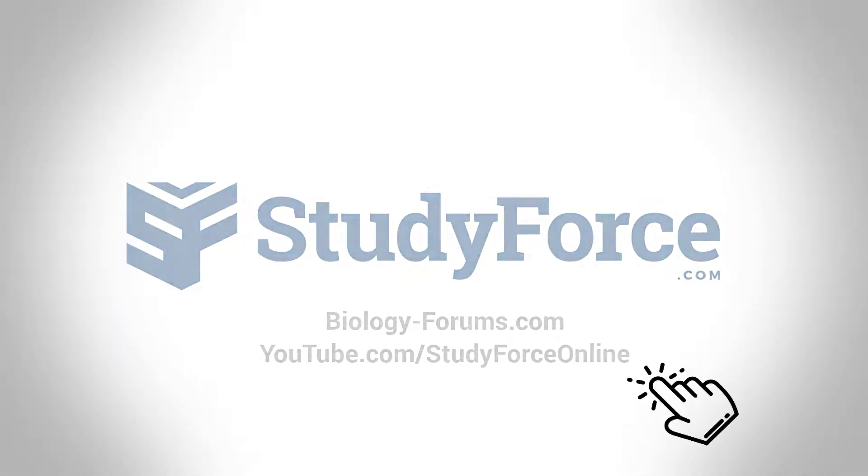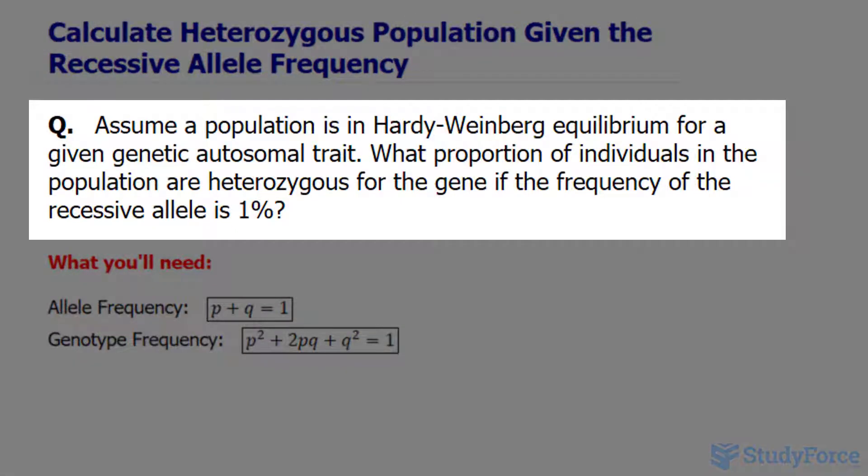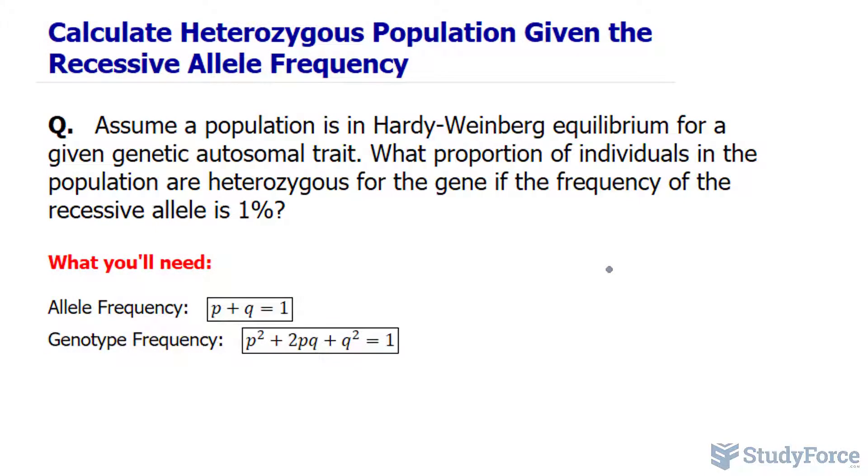In this lesson, I'll show you how to calculate the number of heterozygous individuals in a population when given the recessive allele frequency. The question reads: assume a population is in Hardy-Weinberg equilibrium for a given genetic autosomal trait. Autosomal meaning that the gene is found on a non-sex chromosome. What proportion of individuals in the population are heterozygous for the gene if the frequency of the recessive allele is 1%?